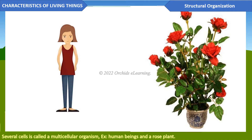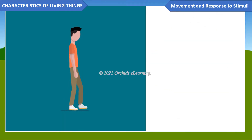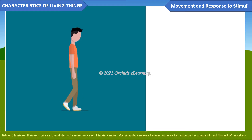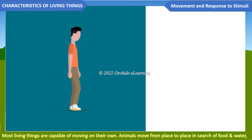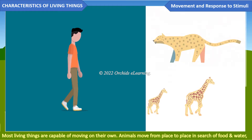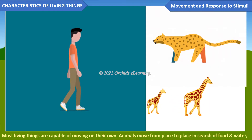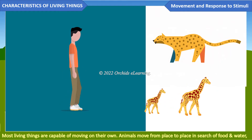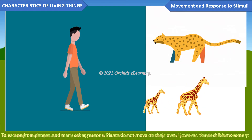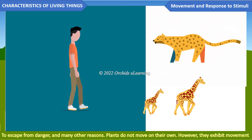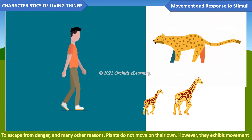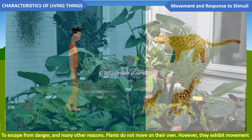An organism whose body consists of several cells is called a multicellular organism — for example, human beings and a rose plant. Movement and response to stimuli: most living things are capable of moving on their own. Animals move from place to place in search of food and water, to escape from danger, and for many other reasons.